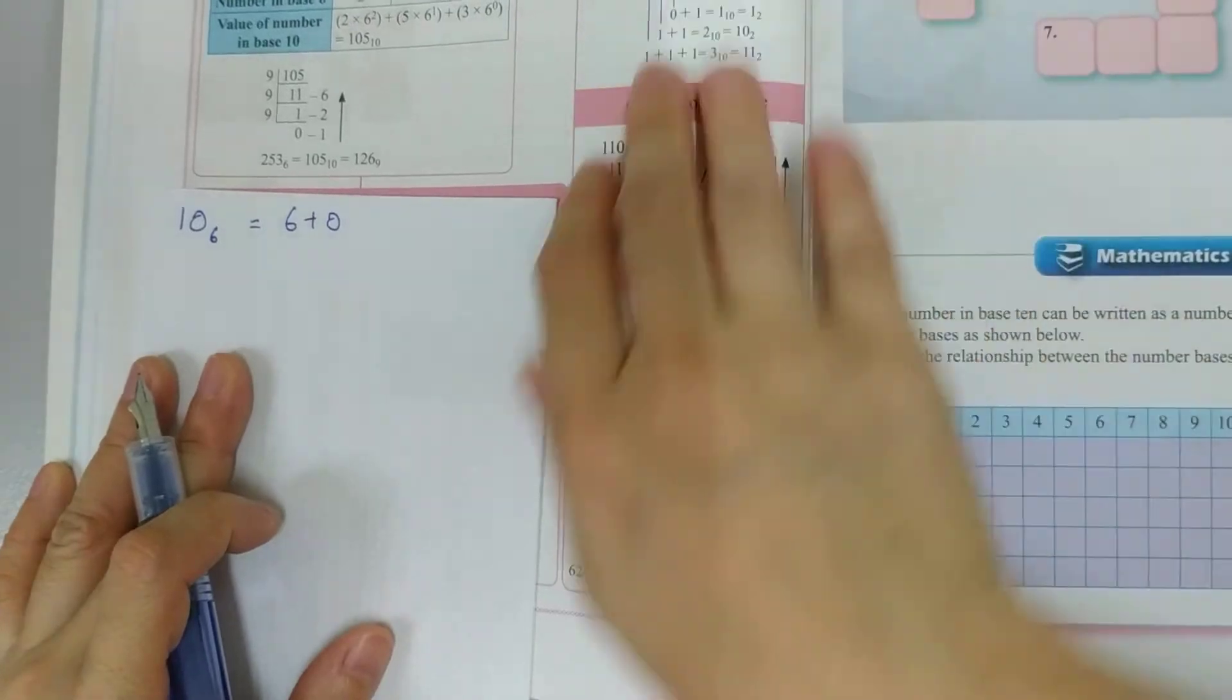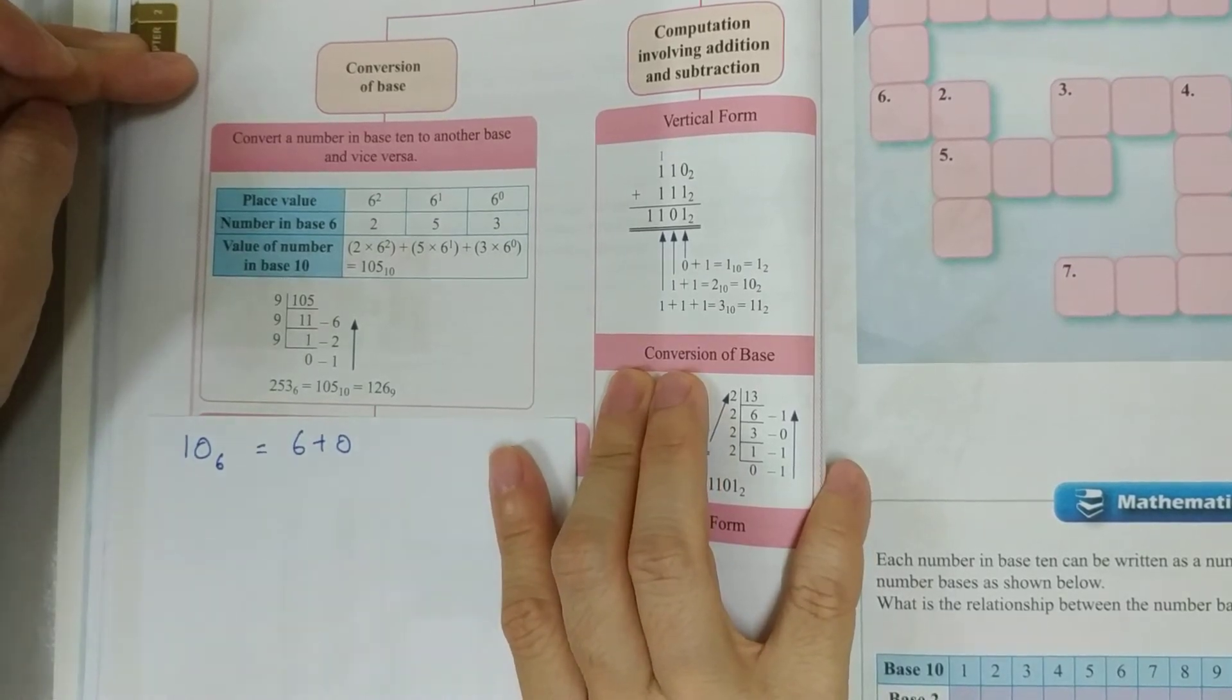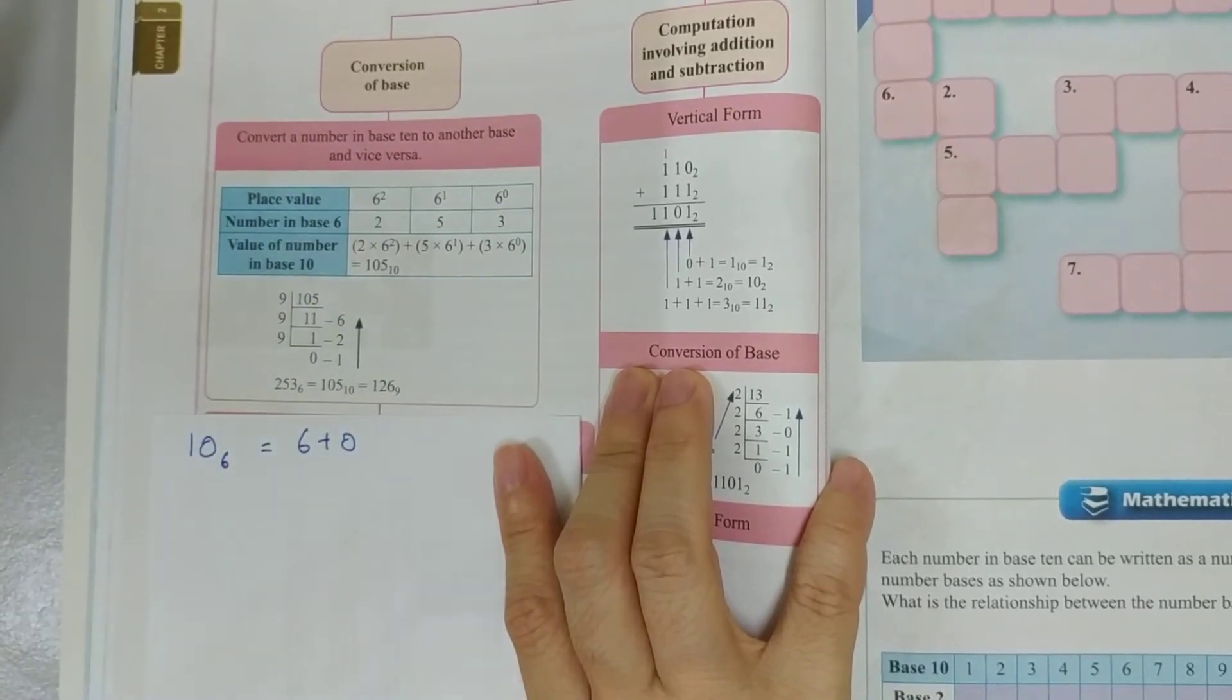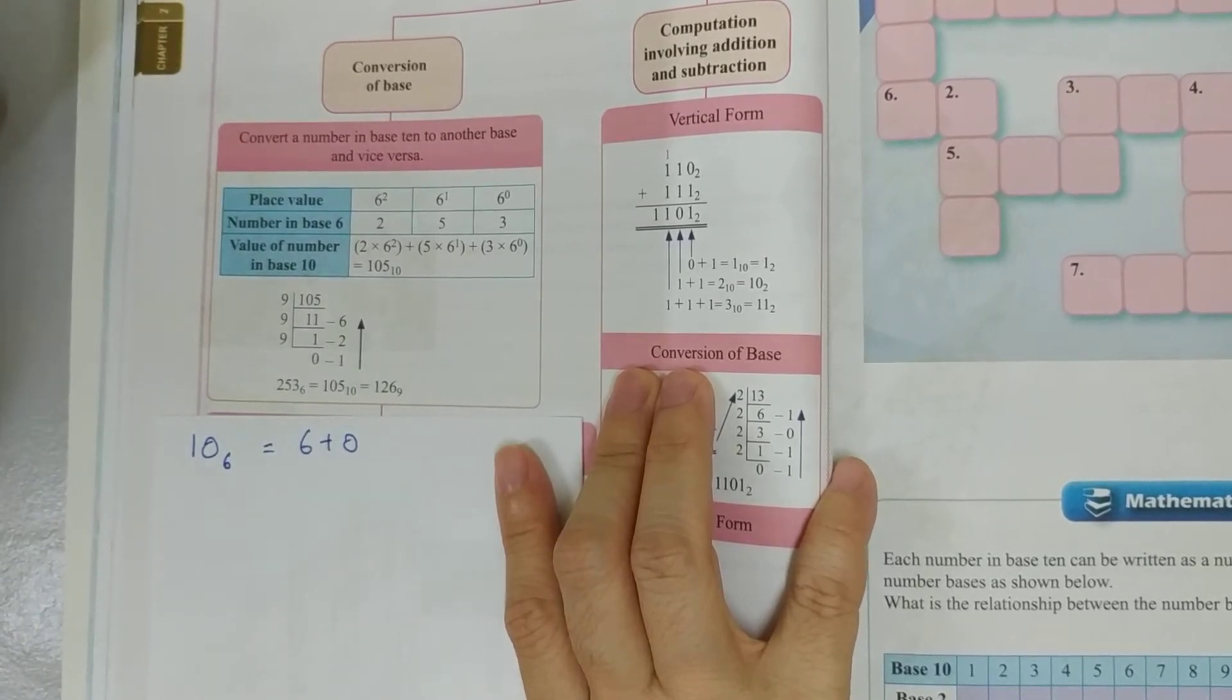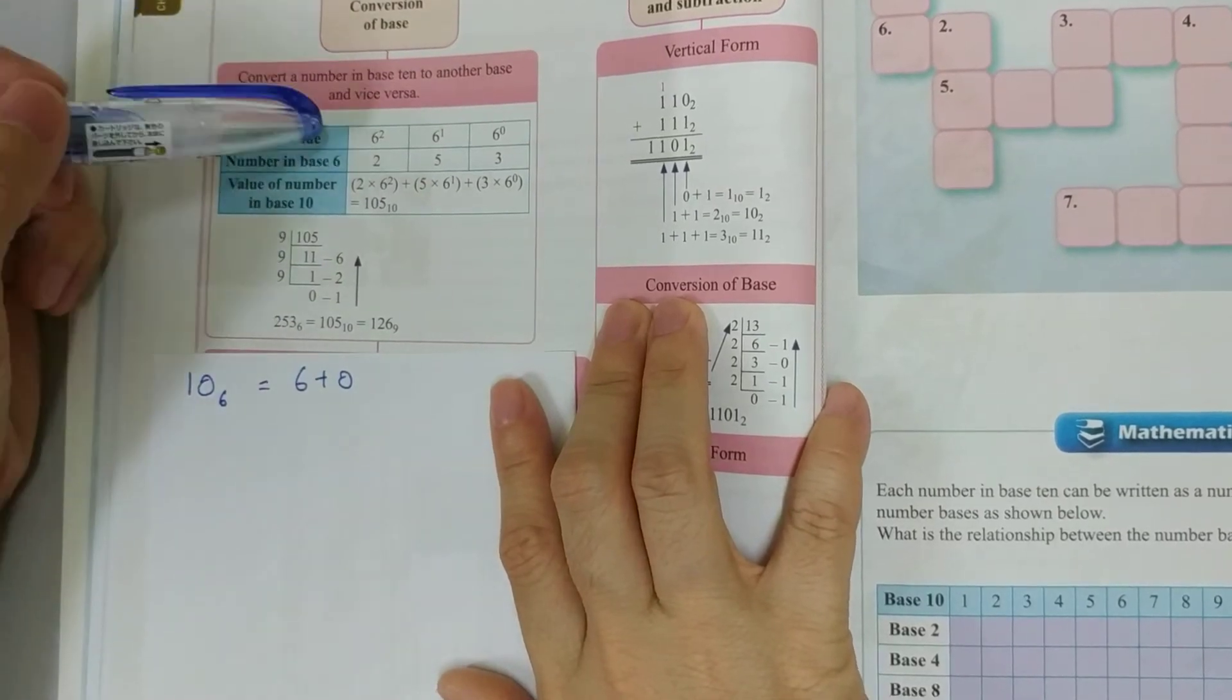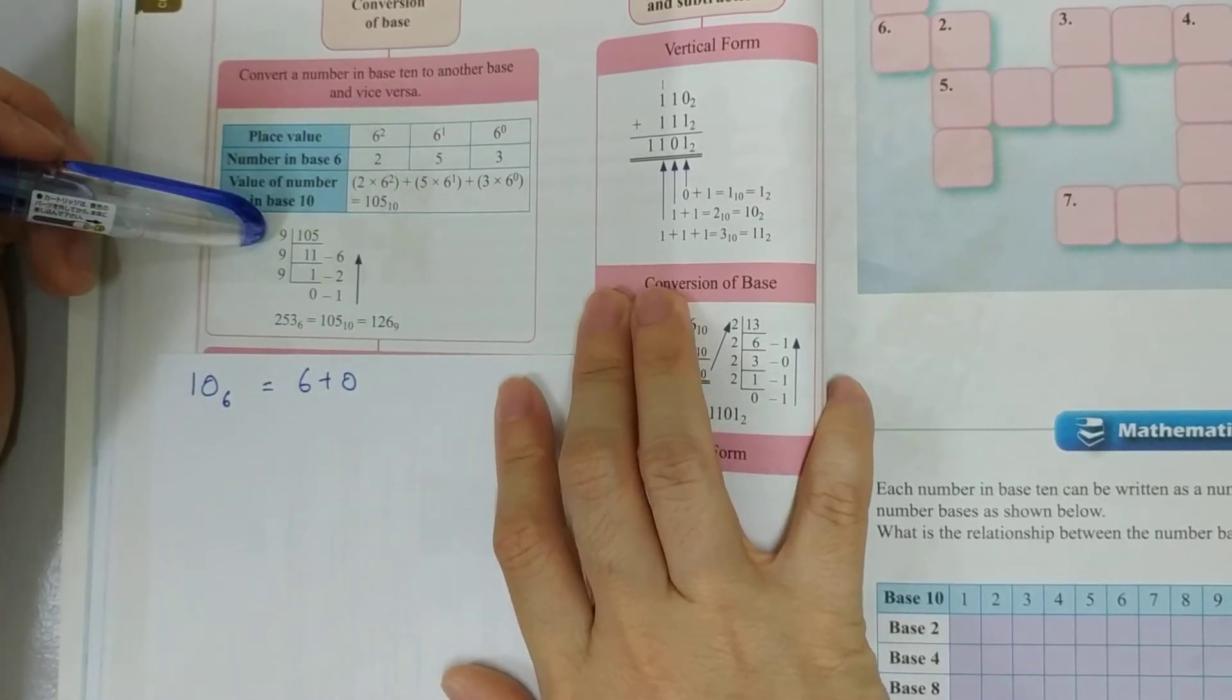If you're converting a base of something to something else, the easiest way would be you change that number to base of 10, which is our normal numbers. We count to 10 and then it's like 10, 100. And then from there we convert it to the new base that we want. So in this case, it is from base 6, which is 253 base 6, and we need to convert it to something in base 9.